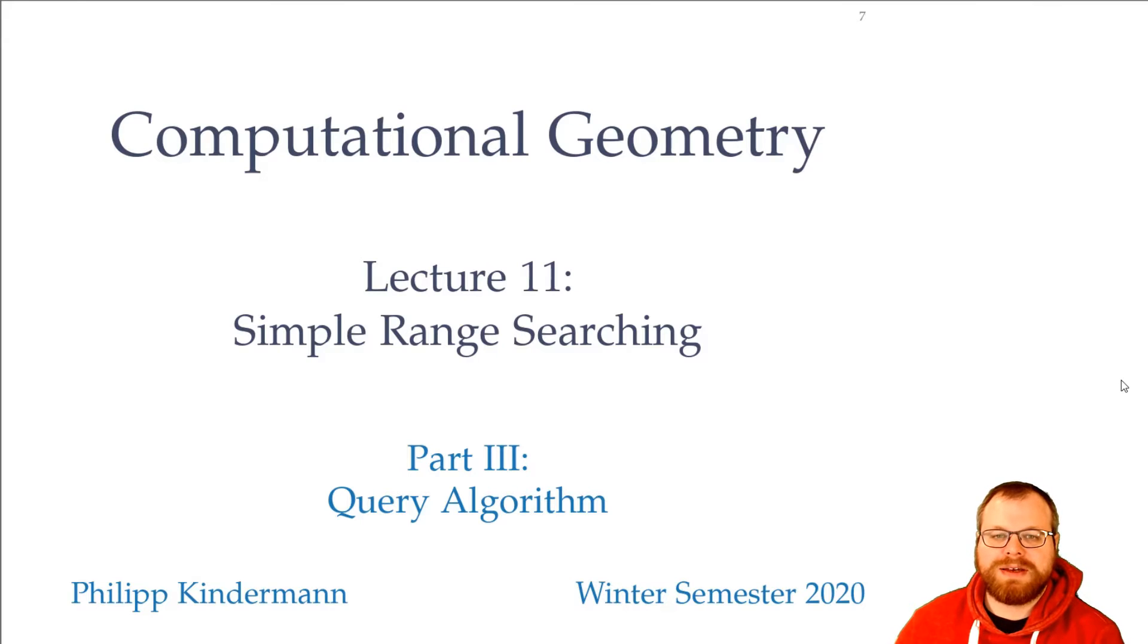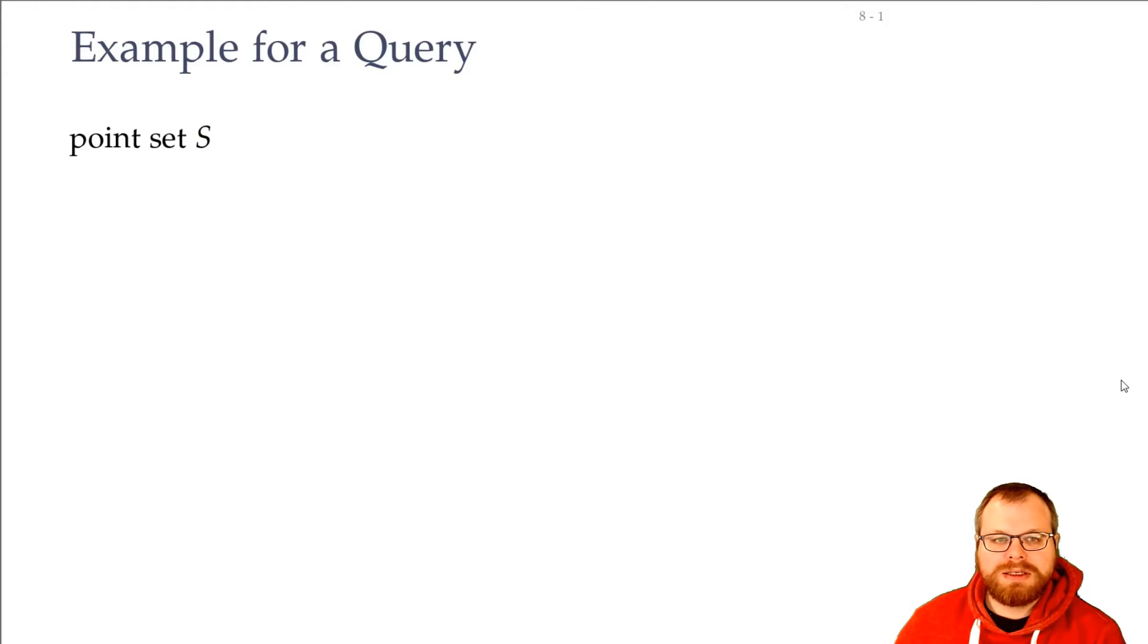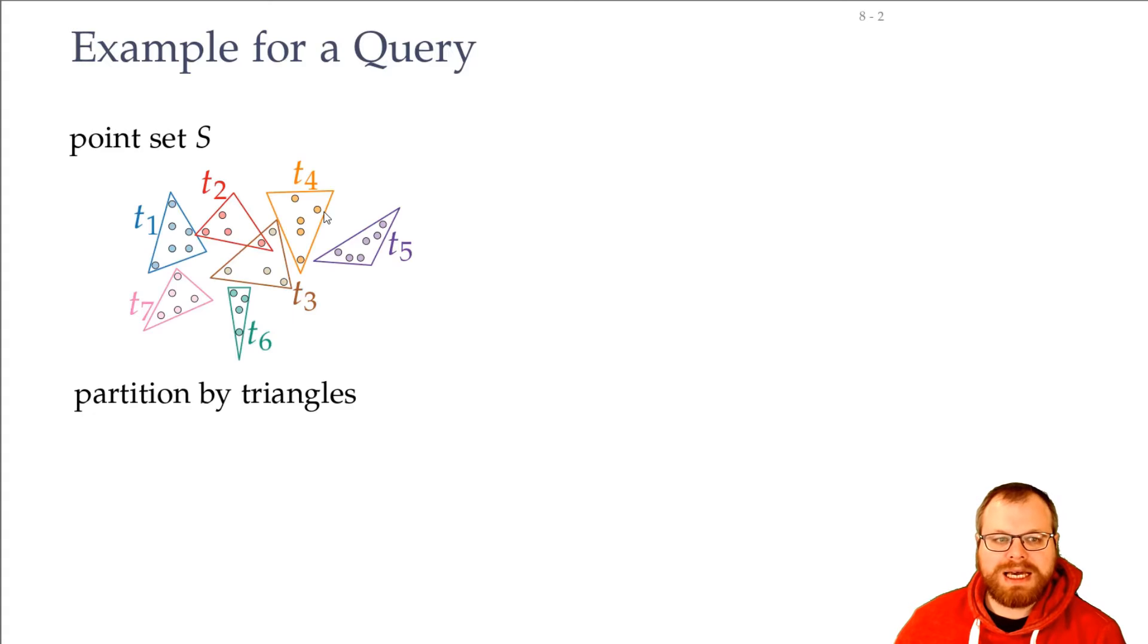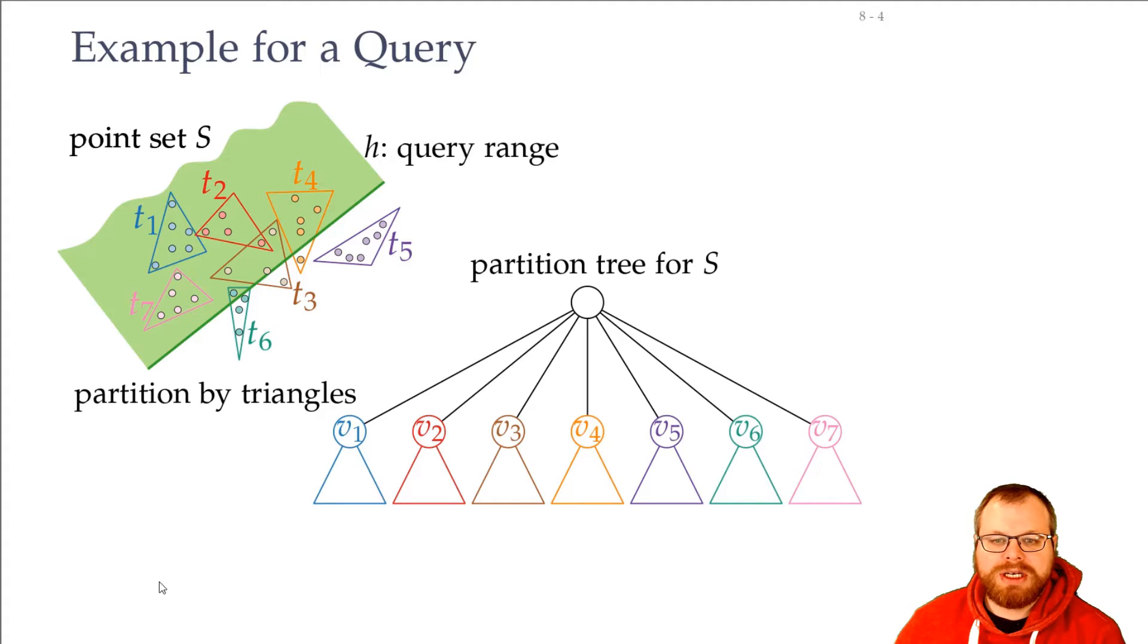We will now have a closer look at the query algorithm. So we have a point set S, we have partitioned it into triangles, we have our query range, and we have the partition tree for S.